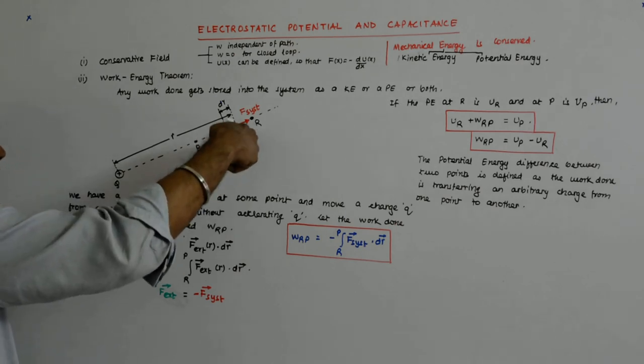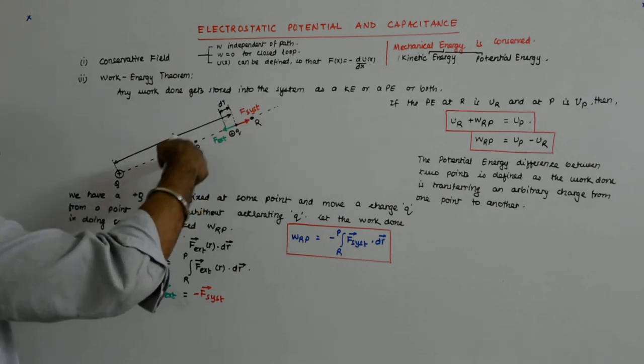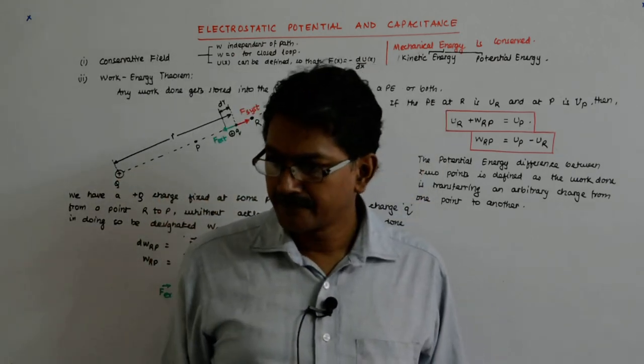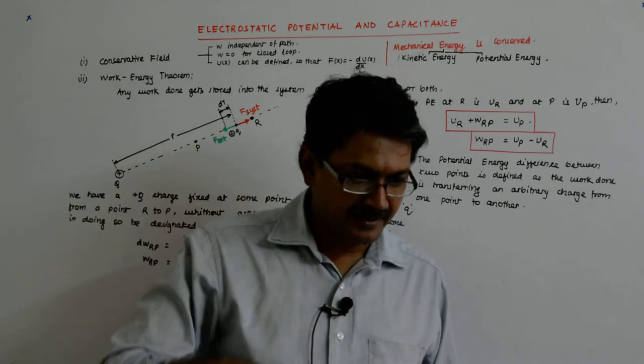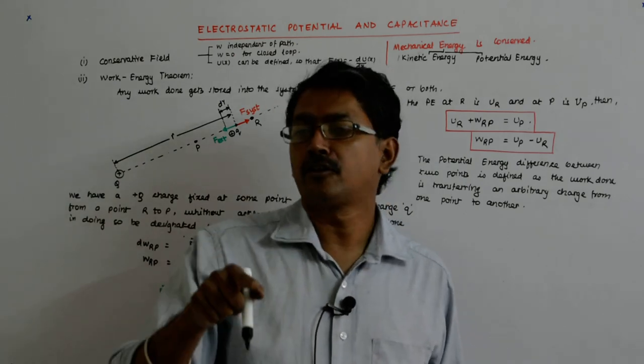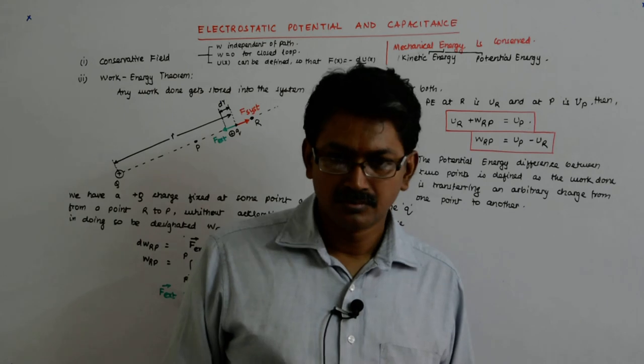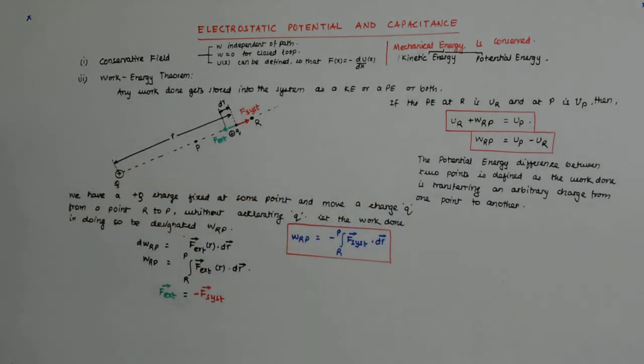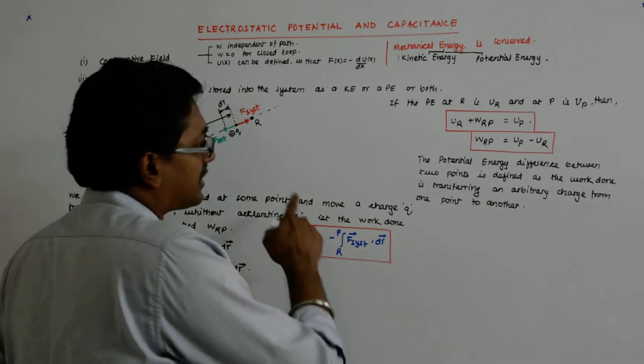So the work done in getting the charge from here to here will also be dependent on Q. So the potential energy difference is dependent on Q, the charge that you are trying to move from R to P. The dependence of the potential energy.